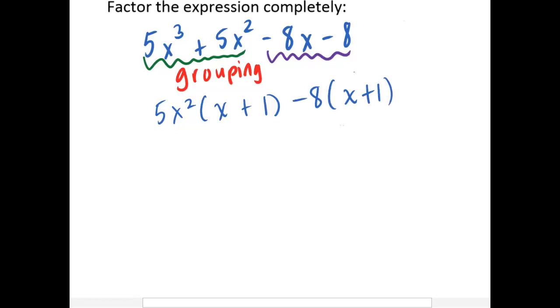And you could try it. If we had factored out a positive eight, we get five x squared times x plus one plus eight times negative x minus one. When we do this, we would like for these two terms to be the same. And if they're not, we want to try it again.